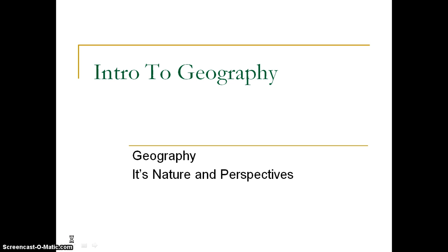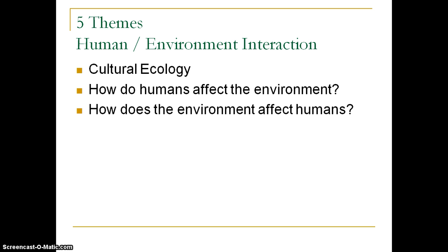Hello everyone and welcome back to AP Human Geography. This is Mr. Elrod. We're still in Unit 1 talking about geography, its nature, and perspectives. This time we're going to talk about a very brief topic — one of the five themes of geography called human environment interaction. Another term for this is cultural ecology. When we look at cultural ecology or human environment interaction, we're looking at one of two things.